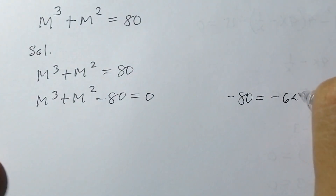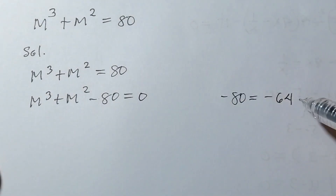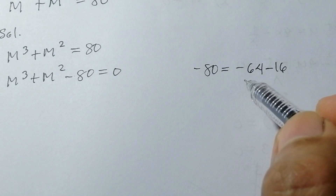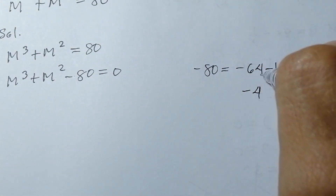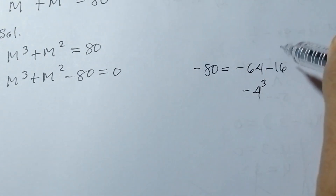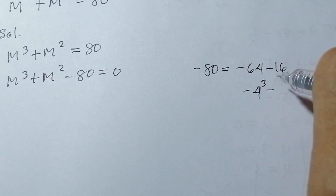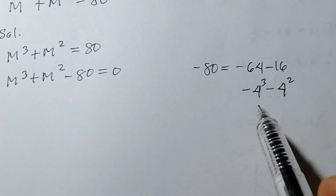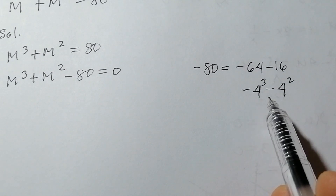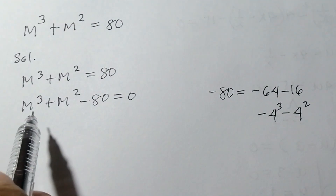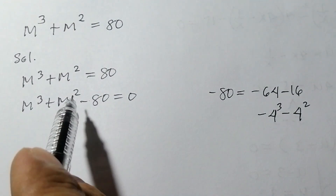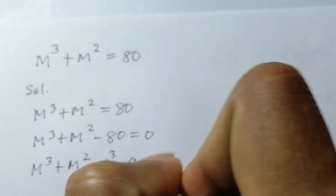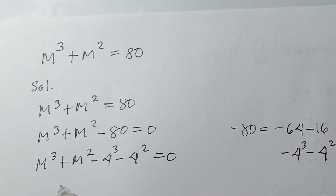Now, since negative 80 is the same as negative 64 and negative 16, we note that 64 is the same as negative 4 raised to the 3rd power, and 16 is the same as 4 raised to the 2nd power. We put this together with m³ plus m².